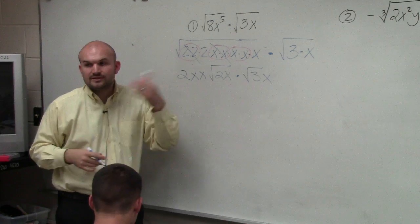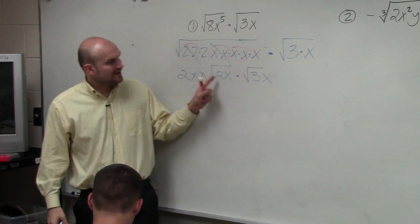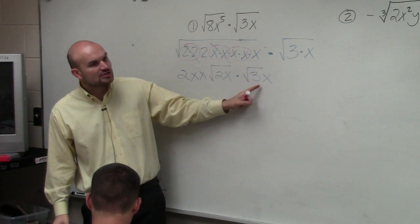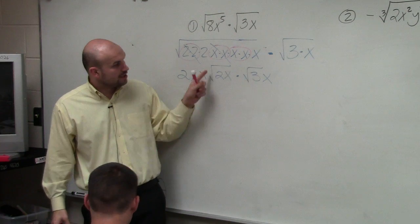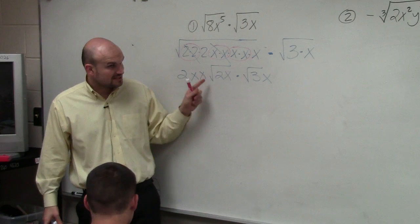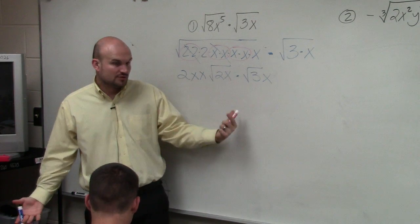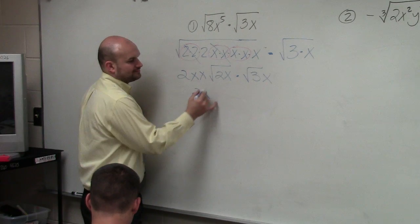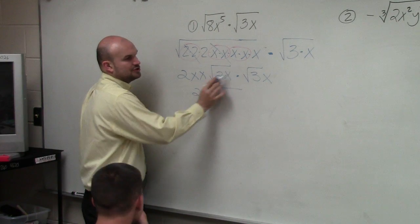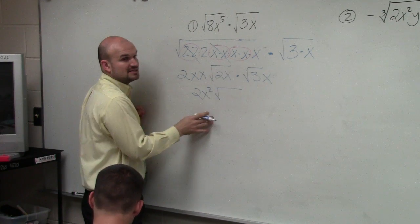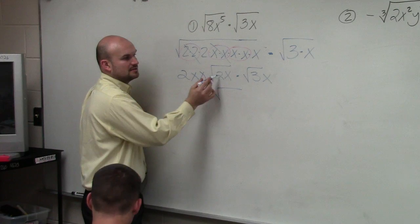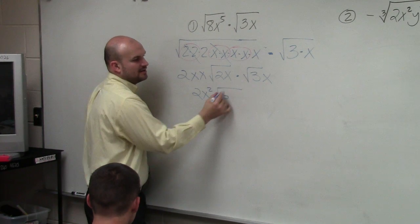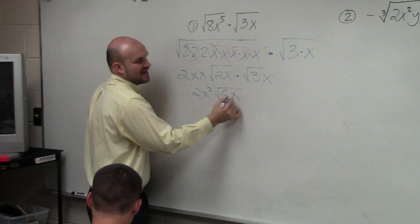Based on the rules, when you have numbers inside and your root is the same, you can multiply the radicands. So 2 times 3 is 6, and x times x is x squared, giving us 6x squared under the radical.